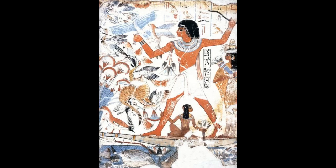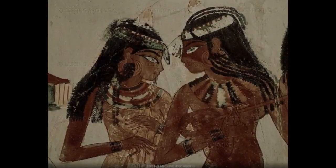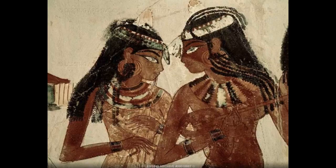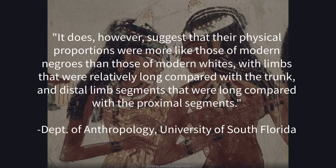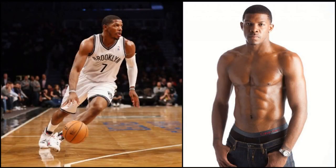Ancient Egyptian stature and limb proportions also show that they tended to have strong affinities to African populations from the tropics. When drawing comparisons to modern populations, ancient Egyptians have been referred to as 'super negro.' As a matter of fact, ancient Egyptians are closer in body proportion to modern American blacks than they are to American whites.